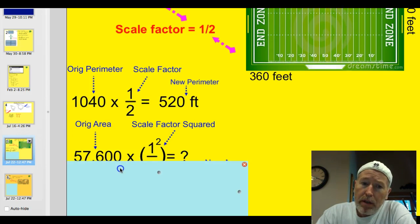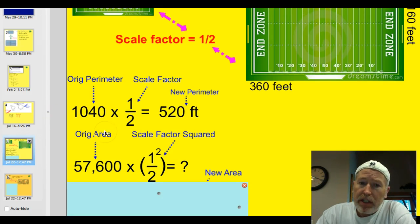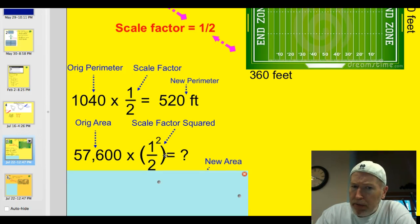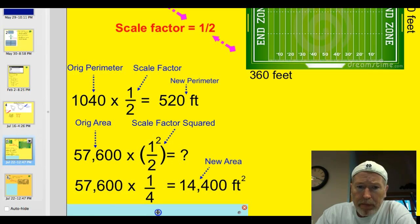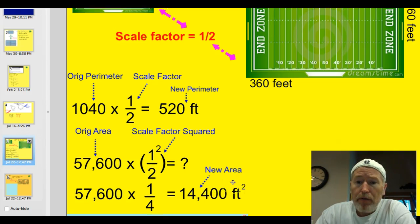Well, how about the area? The original area was 57,600 feet. If we multiply that times the scale factor squared, let's simplify 1 half squared real quickly. 1 half squared is 1 fourth. So if you take that original area, 57,600 feet, times 1 fourth, your new area would be 14,400 feet.